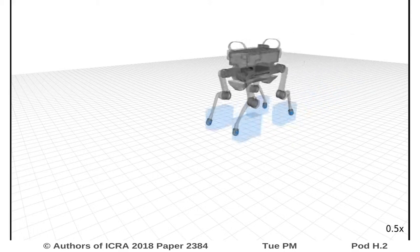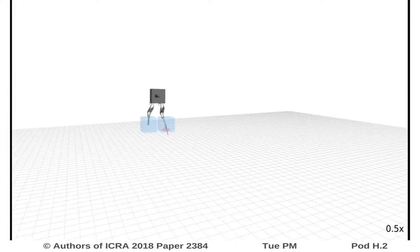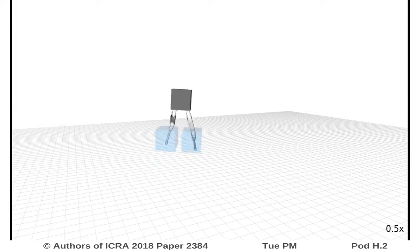Additionally, the red forces can only act if that foot is in contact with the environment and must stay inside the friction cone. In order to generate physically feasible motions, the influence of the feet forces on the base must be taken into account.